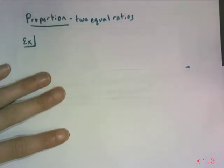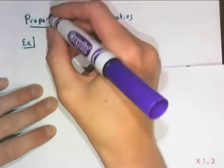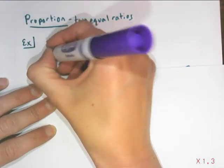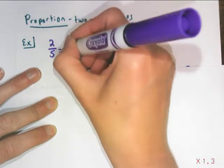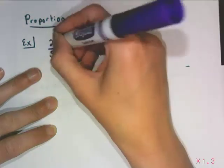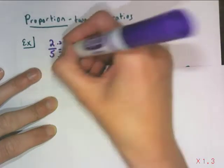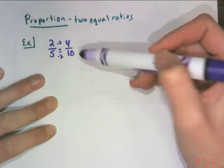A proportion is simply two equal ratios. For example, if I have a ratio of 2 to 5, I have infinitely many proportions I can create. One of them is 4 to 10, because all I did was double the top and double the bottom. So the proportion would be 2/5 equals 4/10.